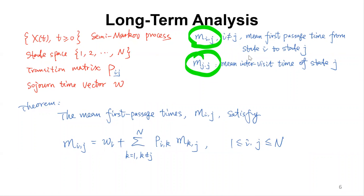Now let's look at long-term analysis. For a semi-Markov process with state space and transition matrix, we define mij (i ≠ j) as the mean first passage time from state i to state j. And mjj is the mean inter-visit time of state j — meaning you are in state j, and you come back to visit state j again.